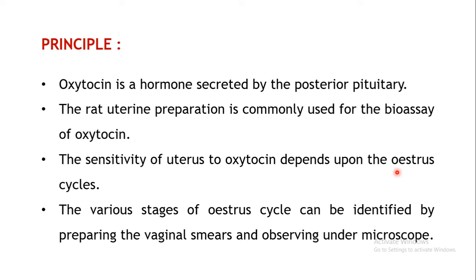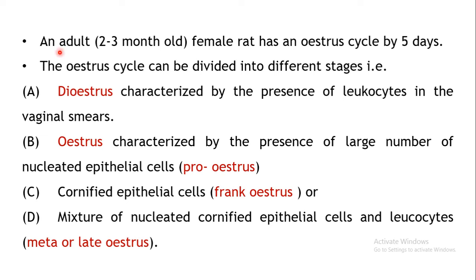To identify the various stages of the estrus cycle, there is a particular method by which you can identify whether the rat is in the estrus cycle and which stage it is in. This can be done by preparing vaginal smears and observing them under the microscope. A small drop of the vaginal secretion is collected on a slide, a smear is prepared, and observed for particular types of cells. An adult rat has an estrus cycle of around 5 days, which can be divided into various stages depending upon the types of cells found.